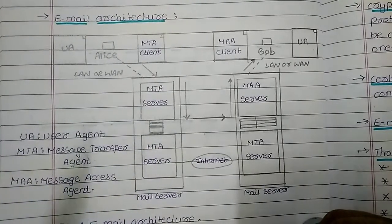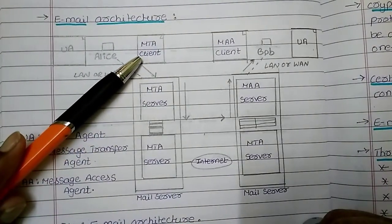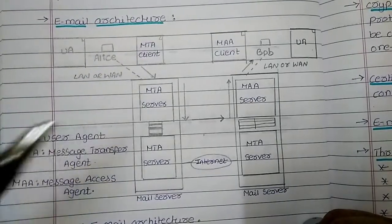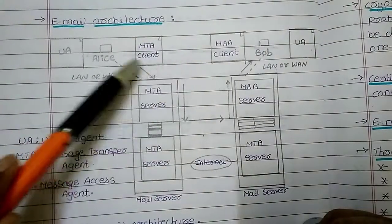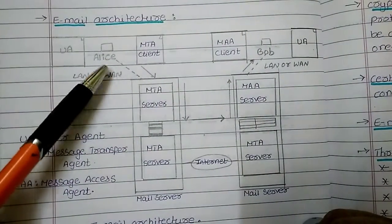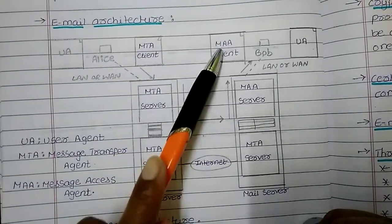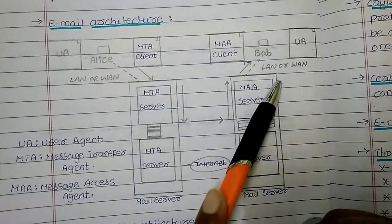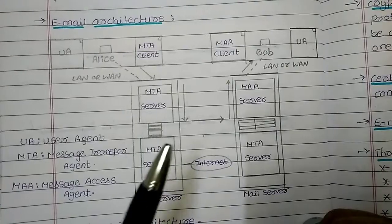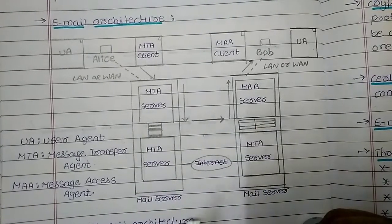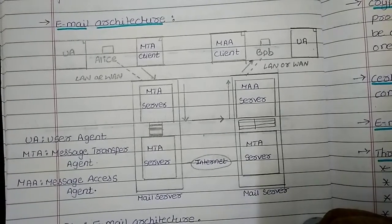In the third scenario, the MTA client is a push program — when Alice needs to send a mail, the MTA client pushes the message, and the MAA client is a pull program that pulls the email toward the receiver, Bob. The fourth scenario shows both MTA and MAA when both sender and receiver are connected to the mail server via LAN or WAN.